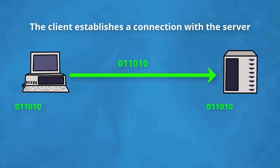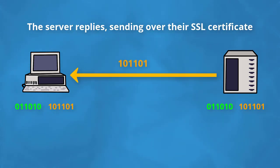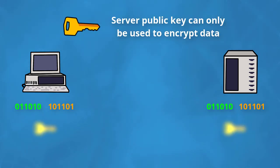It starts with the client establishing a connection with the server, sending over a number of random bytes. In response, the server sends over its own number of random bytes as well as an SSL certificate to verify that they are indeed the host of the domain. Along with this message is also the server's public key.